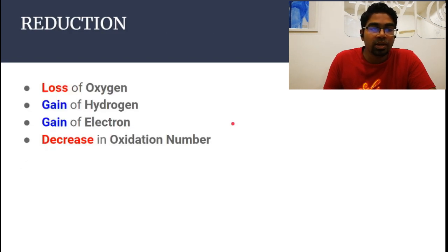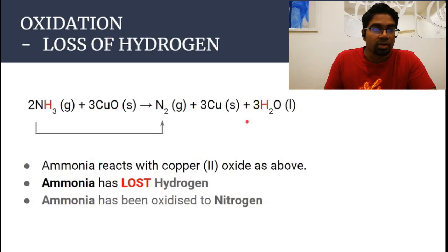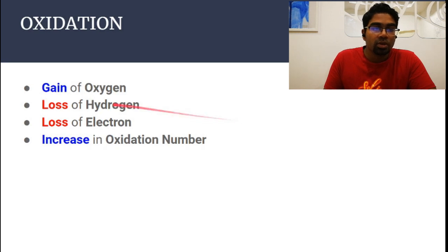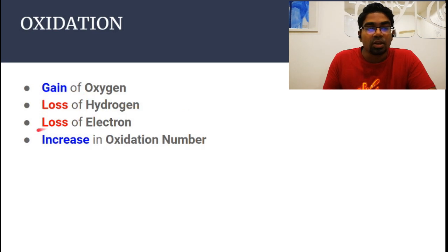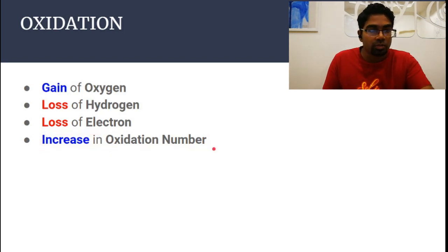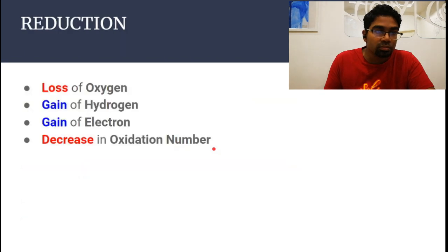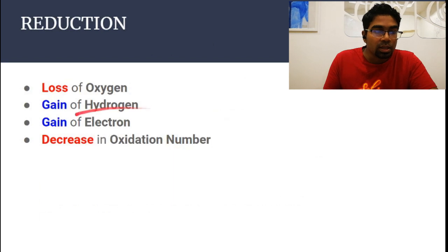Reduction is the opposite of oxidation. Oxidation is the gain of oxygen, the loss of hydrogen, the loss of electrons, and increase in oxidation number. So for reduction, we expect everything to be the opposite: reduction will be loss of oxygen, gain of hydrogen, and gain of electrons.